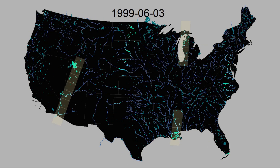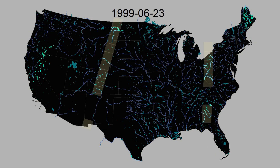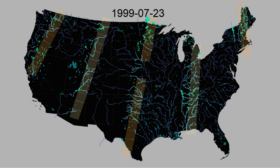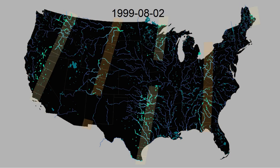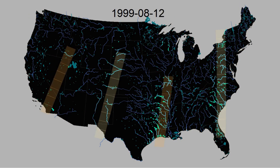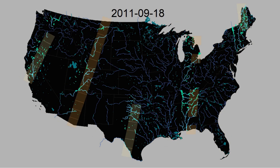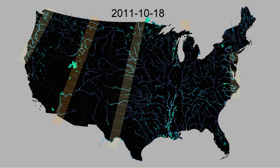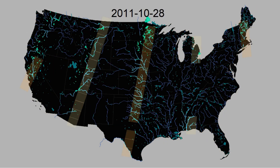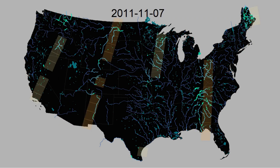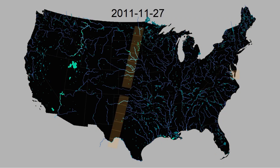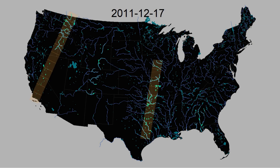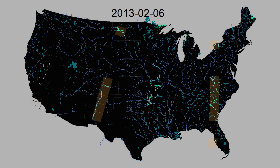Landsat 5 was only the first such satellite, with a sister satellite, Landsat 7, launched in 1999, shown here with a more orange path color. And after 28 years of service, Landsat 5 stopped regularly sending imagery back to Earth in late 2011, but shortly thereafter the newest Landsat satellite, Landsat 8, was launched in 2013, here shown with a slightly more red color.